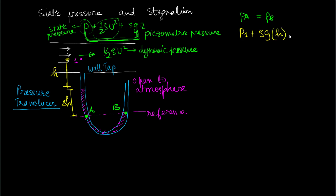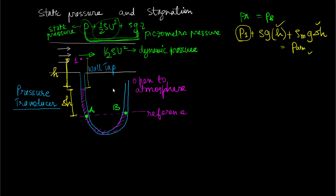On the other end, the pressure at B is simply p_atmosphere. If we know the height of the manometric fluid from the centerline of the tube, we can determine p1 from the other known parameters. This allows us to measure the static pressure, and the wall tap is independent of dynamic pressure because there is no component of velocity in the tap direction.